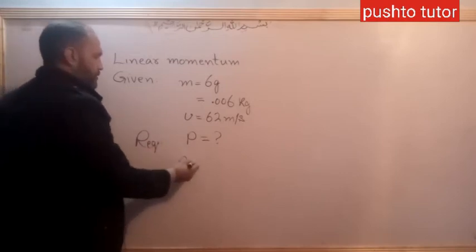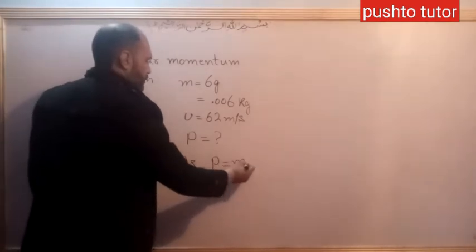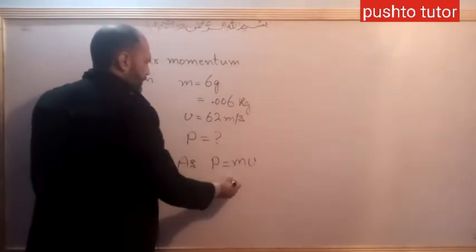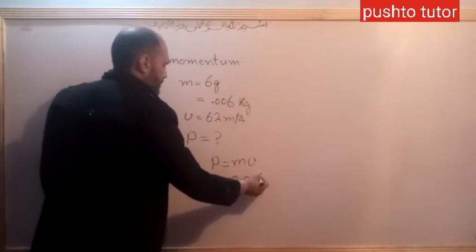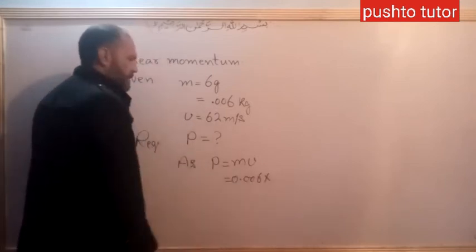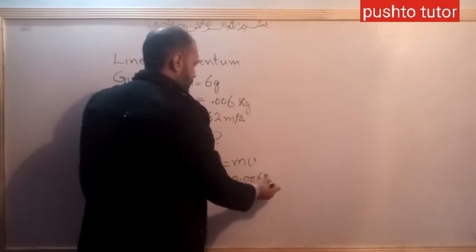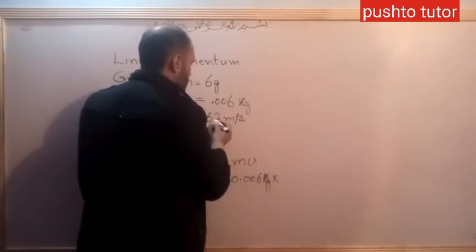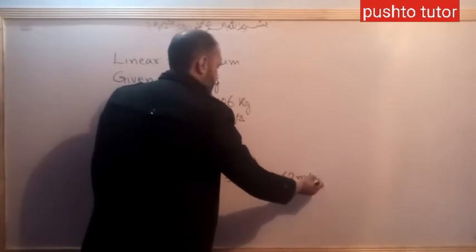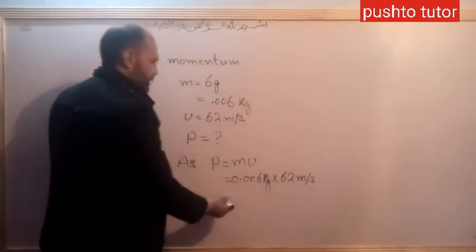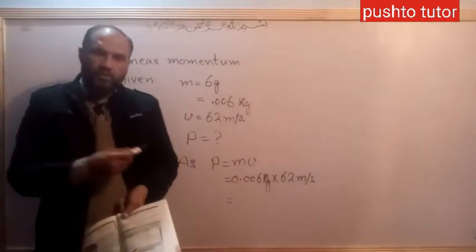The solution: P is equal to M multiplied by V. The mass is 0.006 kilograms multiplied by the velocity of 62 meters per second, giving the momentum as 0.006 multiplied by 62.